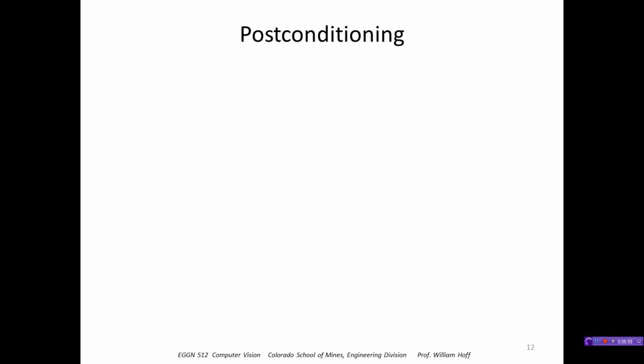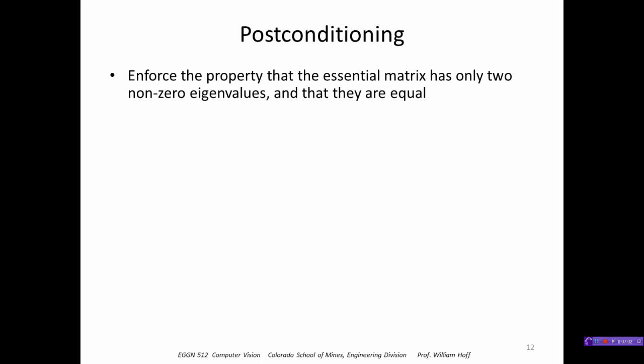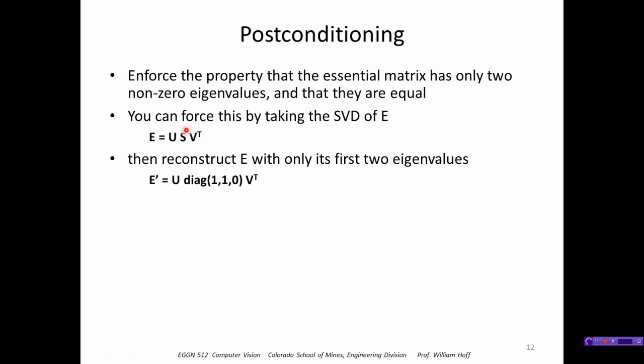As far as post-conditioning, we enforce the property that the essential matrix has only two non-zero eigenvalues and that they're equal. We can do this by again decomposing the essential matrix using singular value decomposition. This matrix S should be a diagonal matrix with values one, one, zero, but we can enforce that by replacing S with exactly that matrix and using the U and the V that we calculated. In MATLAB, that's quite easy: you just take the SVD of E and reform E using U and V but using this diagonal matrix.